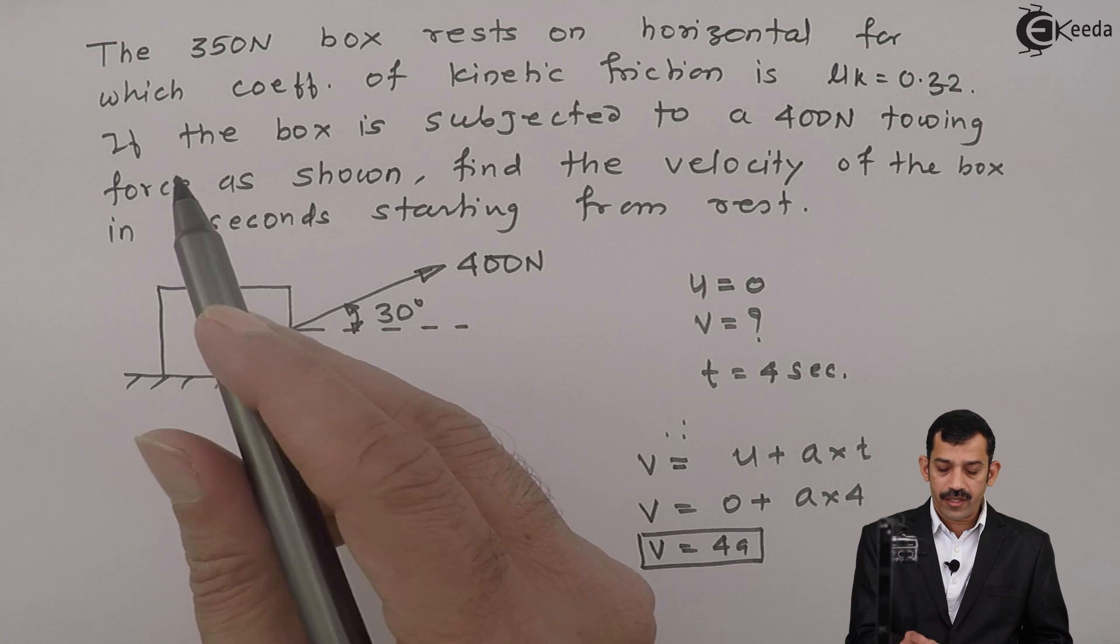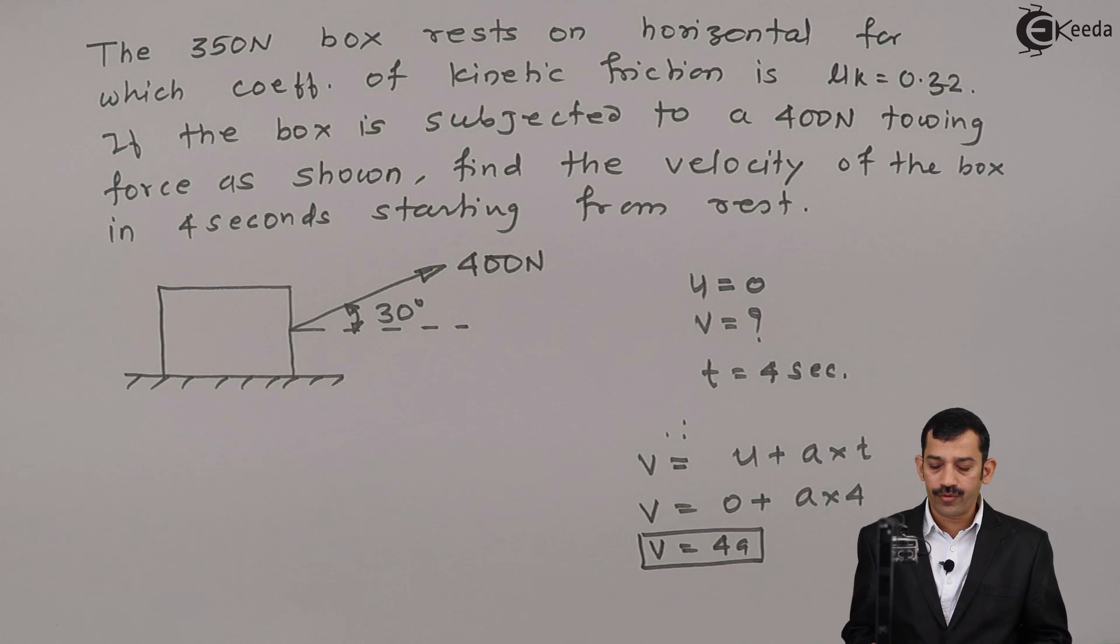In FBD, weight 350 Newton given, 400 Newton towing force, mu is what? 0.32. I will draw FBD just on the next page.